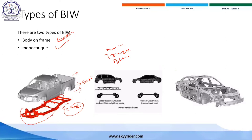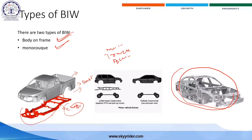Monocoque body means the chassis and skeleton are combined and welded together — there is no separate chassis visible, only the body skeleton is visible. Whenever an impact hits the front or side part of your vehicle, the loads get distributed all over the body parts, so where the impact is, the load is reduced and distributed.